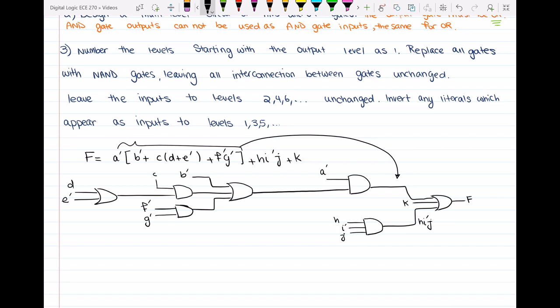Now what we have to do, we go to step three. So we have to number the levels starting with the output level as level number one. So I see that here is my level one. Then I will go to the second level. So this is level number two. Then level number three. Level number four. And level number five.